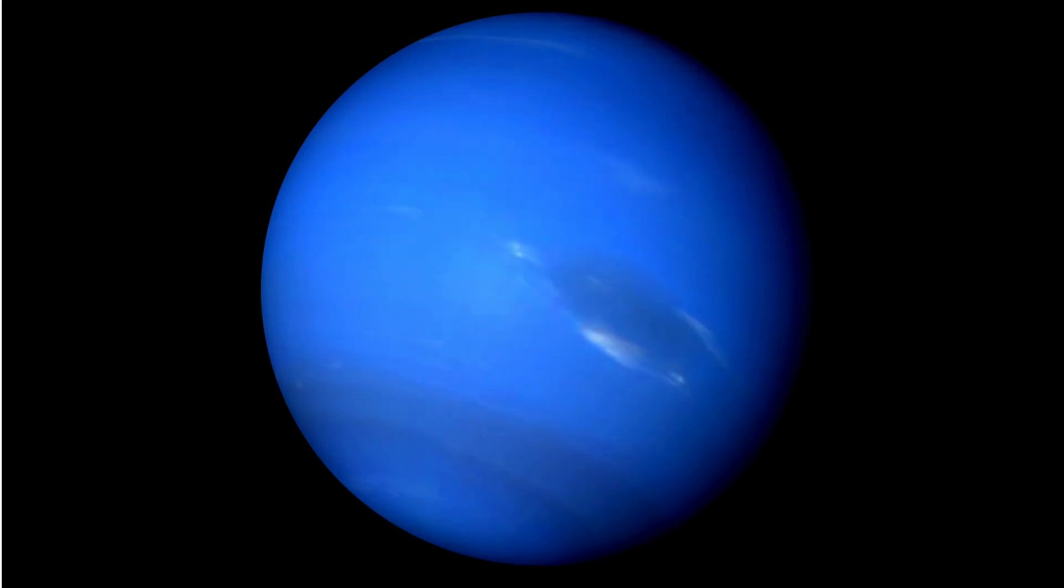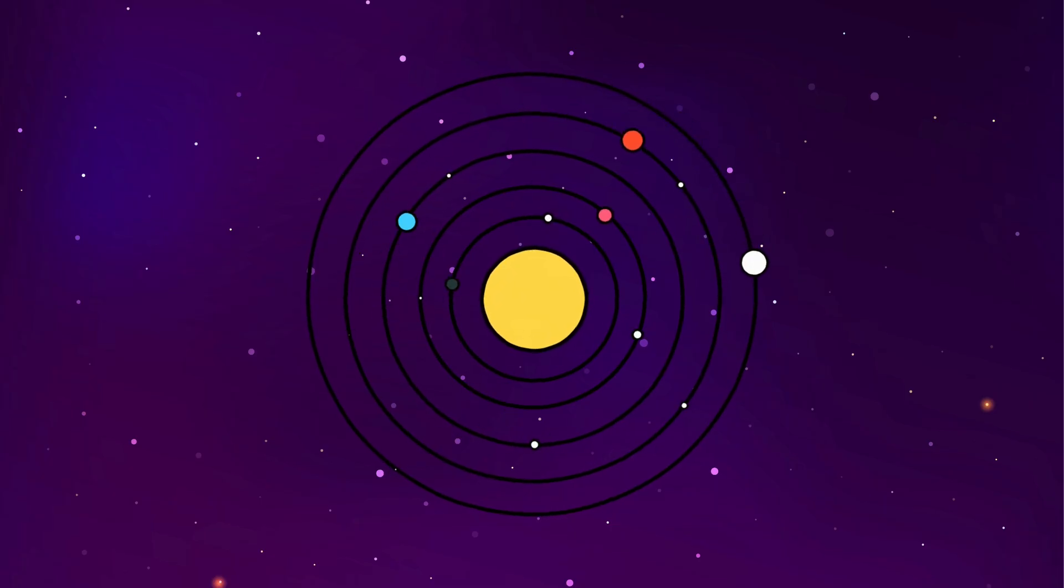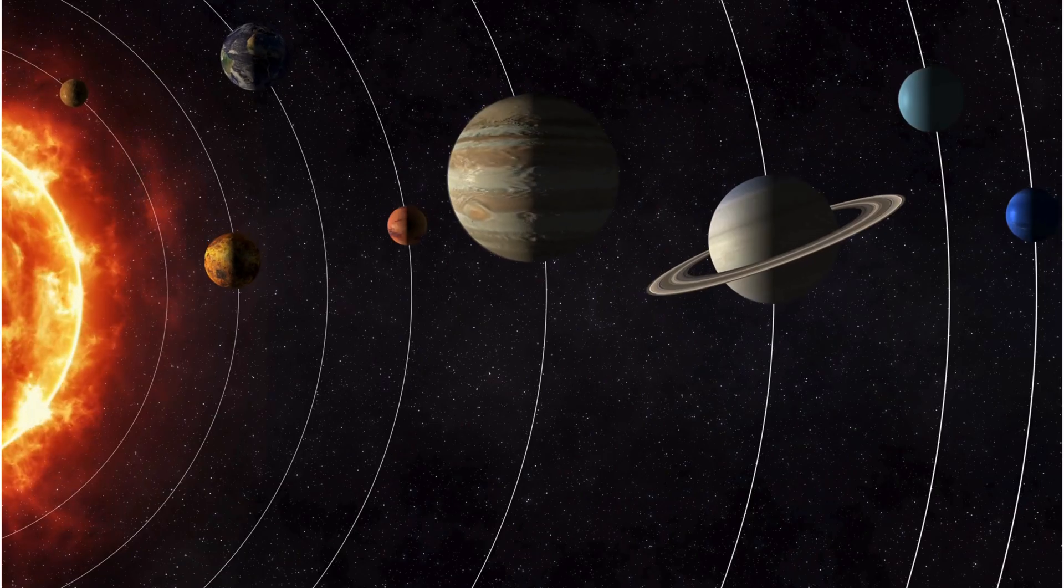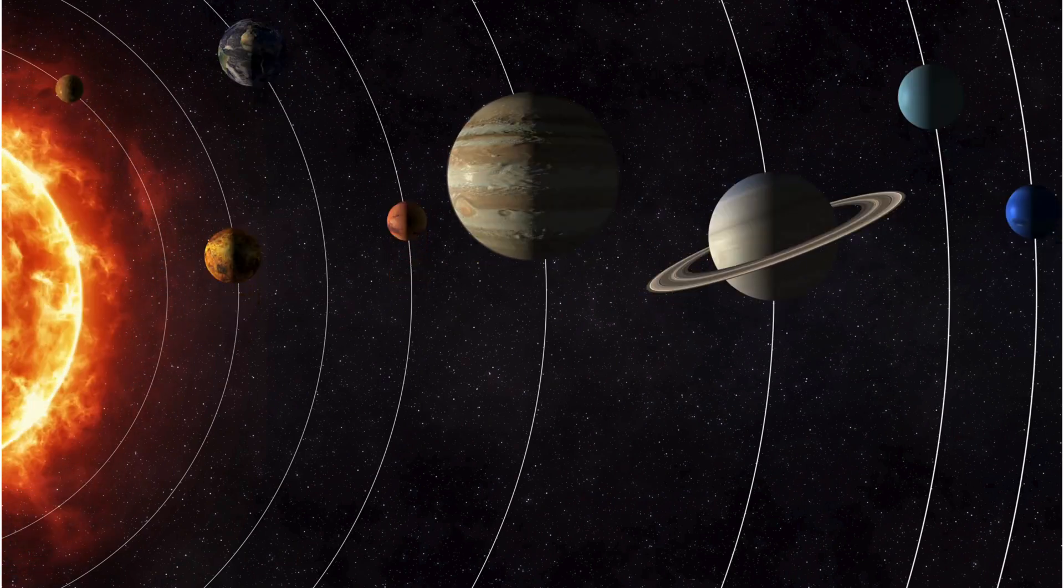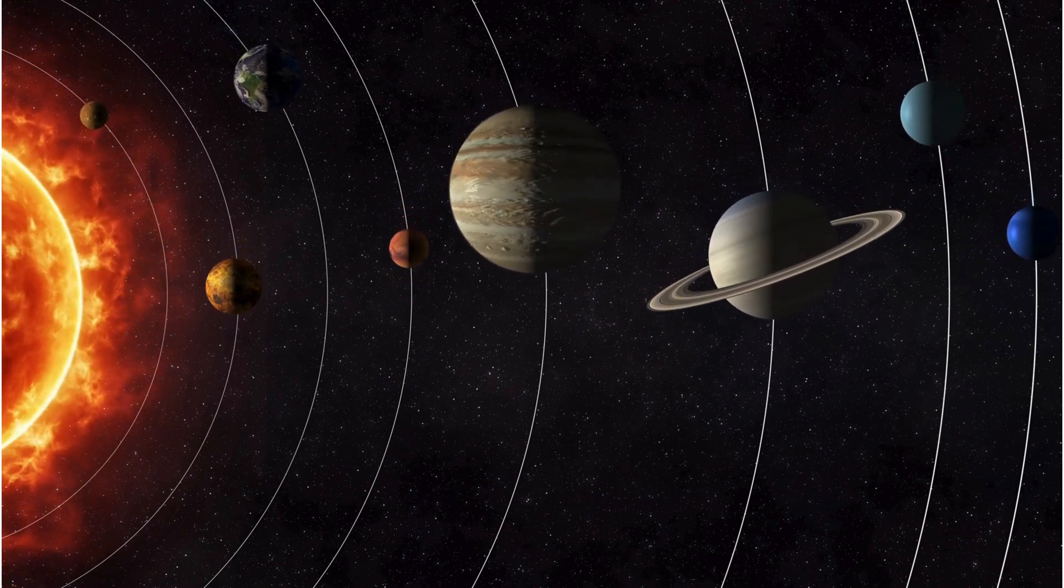Wow! You did an amazing job learning about all the planets. Let's say their names one more time together. Mercury, Venus, Earth, Mars, Jupiter, Saturn, Uranus, Neptune.